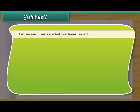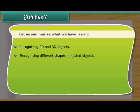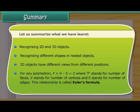Summary. Let us summarize what we have learned. Recognizing 2D and 3D objects. Recognizing different shapes in nested objects. 3D objects have different views from different positions. For any polyhedron, F plus V minus E is equal to 2, where F stands for number of faces, V stands for number of vertices, and E stands for number of edges. This relationship is called Euler's formula.